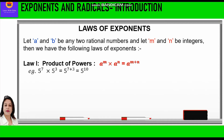The first law is related to products of powers, which says a raised to power m into a raised to power n is equal to a raised to power m plus n. That means whenever the exponents are multiplied, we have to add their powers. For example, 5 raised to power 7 into 5 raised to power 3 gives 5 raised to power 7 plus 3, which is equal to 5 raised to power 10.